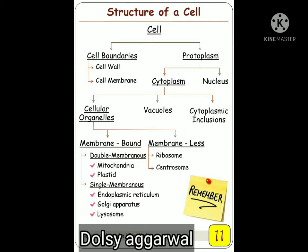Ribosome is present in prokaryotic cells. Centrosome consists of astral bodies which are present in animal cells. They aid in the division of the animal cell through the formation of spindle fibers. They contain two centrioles. Together we call this the centrosome.